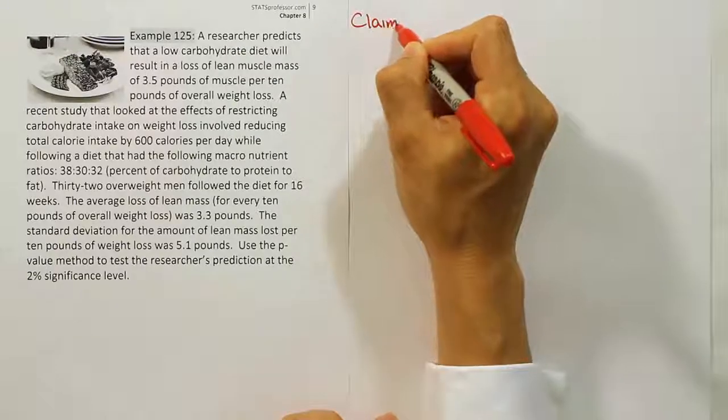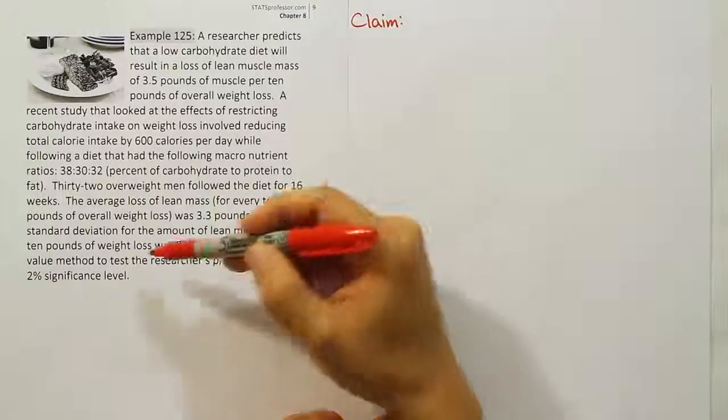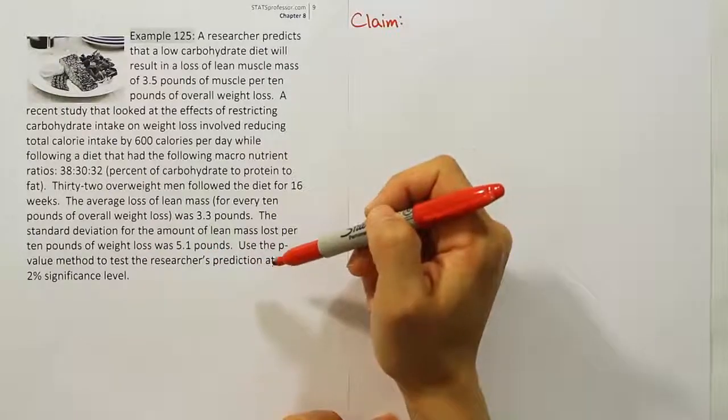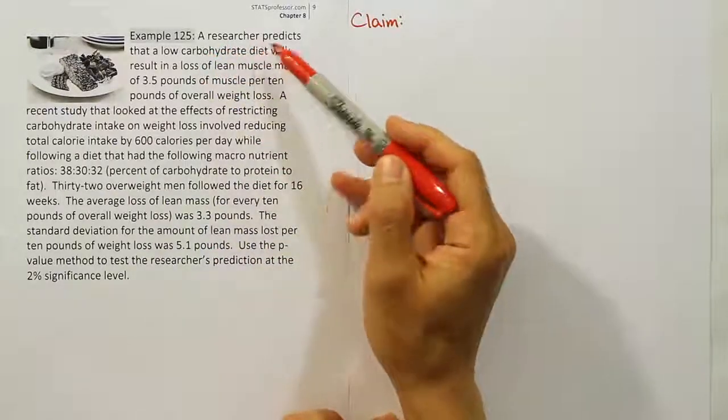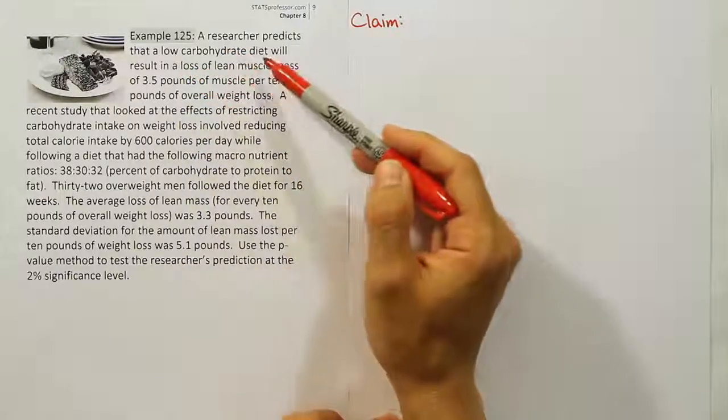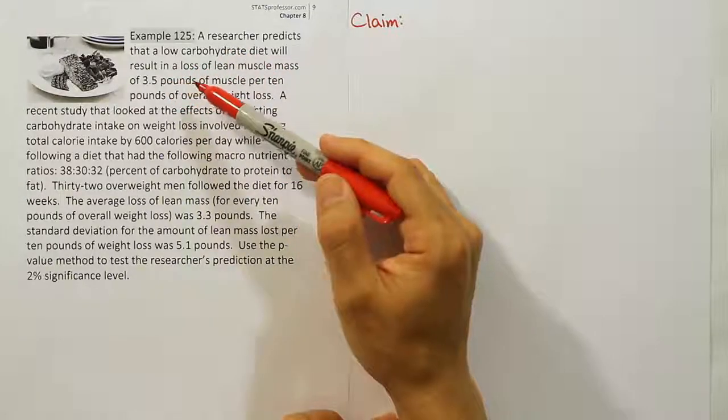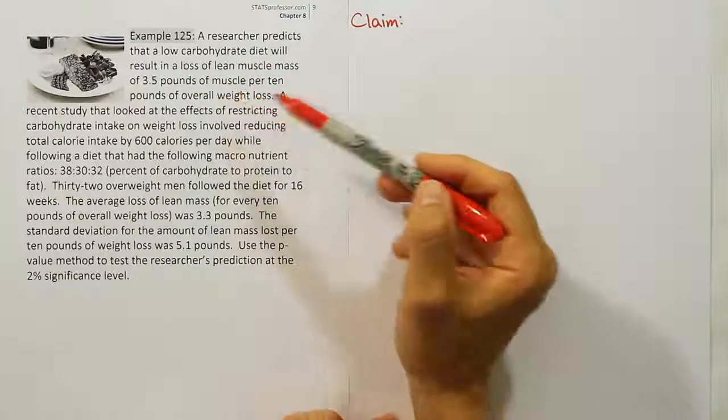The claim here is based on the researcher's prediction. He predicted that a low-carbohydrate diet will result in a loss of lean muscle mass of 3.5 pounds of muscle per 10 pounds of overall weight loss.